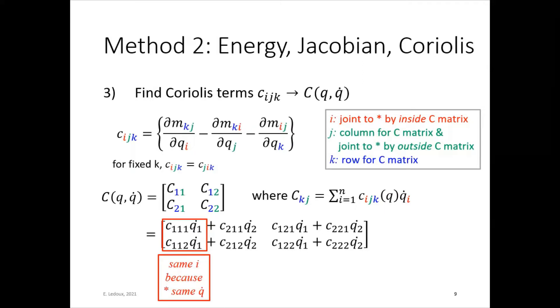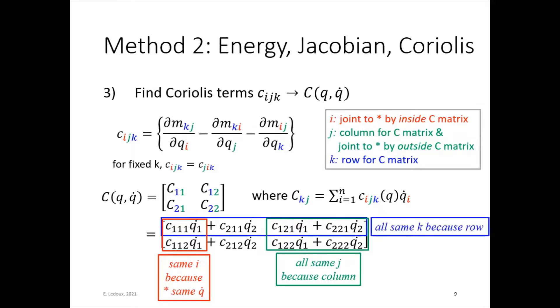So C_{ijk} we get using this formula. Where i is the joint to multiply by inside the C matrix. j is the column for the C matrix and the joint to multiply by outside the C matrix. And k is the row for the C matrix. So all of these terms have the same i because they're all multiplied by the same q̇. They're all multiplied by q̇_1. So the first element of that C_{ijk} is 1. Now these are all in the same column. So they all have the same j in the C_{ijk}. So that is 2 because they're all in the second column. Now finally, these all have the same k because they're all in the same row. So the third subscript here is 1 because this is the first row.